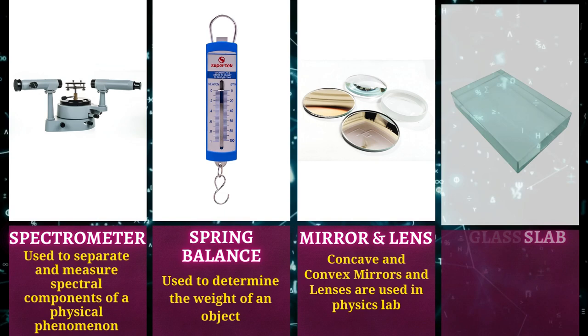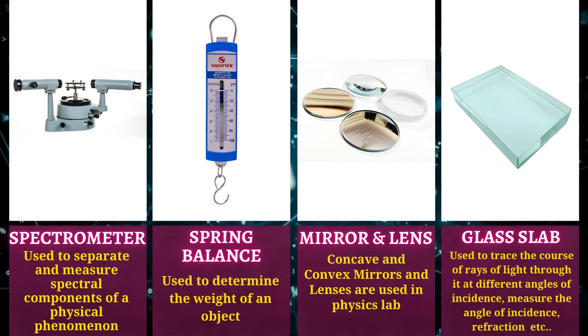Concave and convex mirrors and lenses are used in physics lab. Glass slab is used to trace the course of rays of light through it at different angles of incidence.